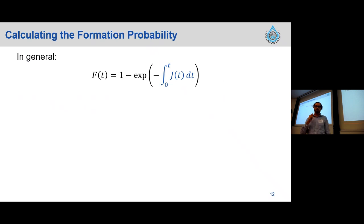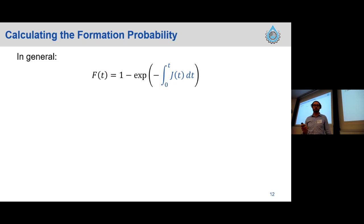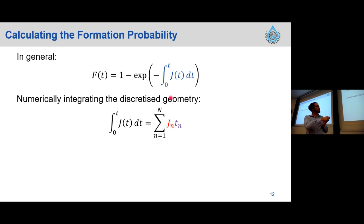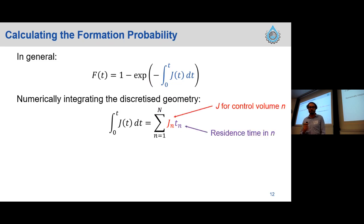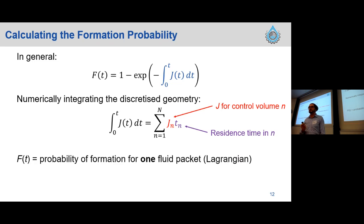Mathematically it's pretty simple to calculate the formation probability once you know how J changes. The nucleation rate as a function of time is what we're really trying to model. We plug it into an exponential equation to get formation probability F(t). The advantage of discretizing our geometry is that we can swap the integral out for a sum — this complex integral just becomes a sum of all the nucleation rates in each section multiplied by the residence time in each section. Importantly, F(t) here is defined as the formation probability for a single fluid packet going through our system.